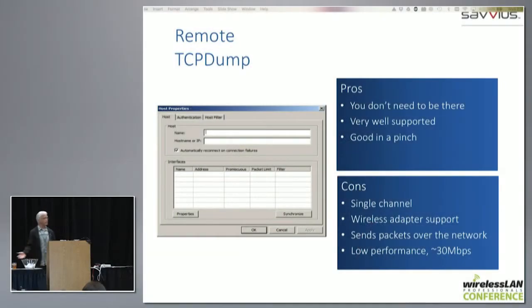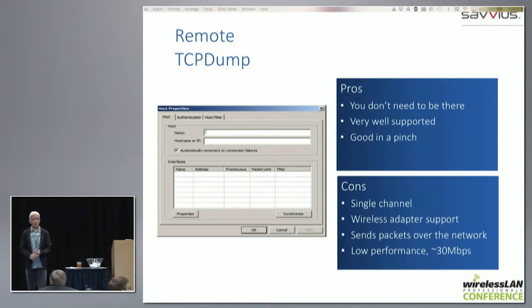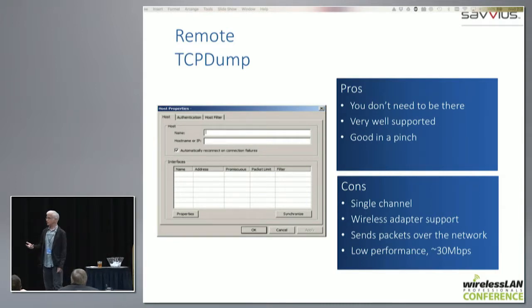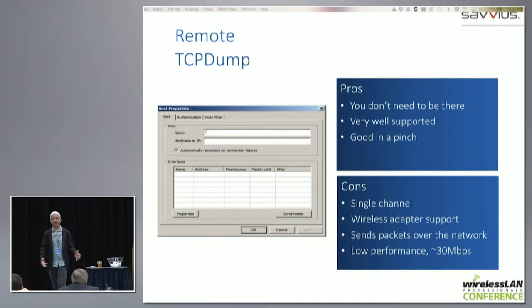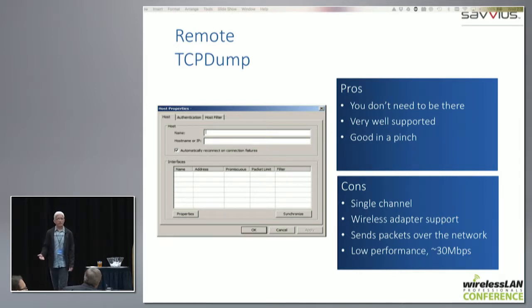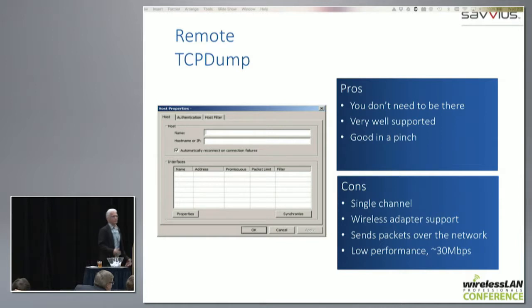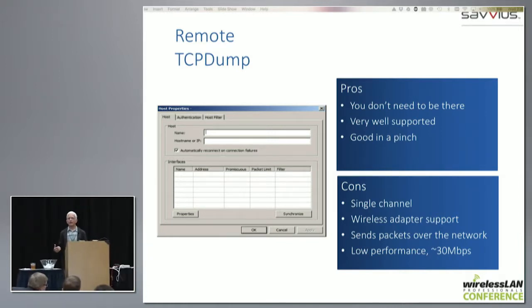TCP dump is another remote alternative — more popular for wired captures, but also can be done in certain wireless situations. Most solutions will have support for TCP dump within them. It's great — you don't need to be there, it's well supported, it's in pretty much every Linux distro and any appliance you'll find anywhere. It doesn't always have wireless support — that's one drawback. And in our experience with TCP dump, it has very low performance — we can get about 30 megabits per second back out of TCP dump before it really starts to fall apart. So you're certainly not going to be doing high-rate AC stuff over TCP dump.